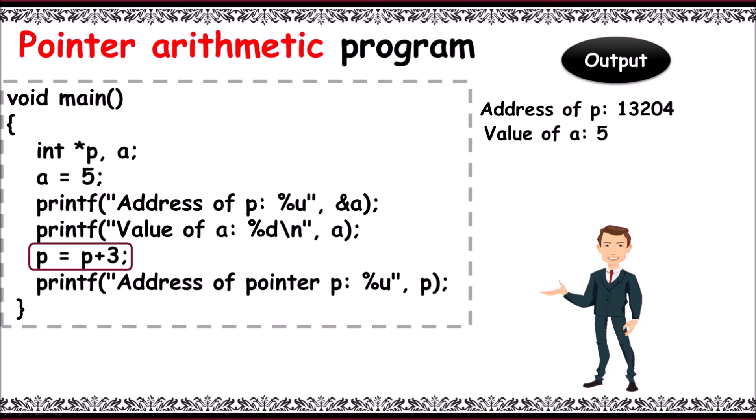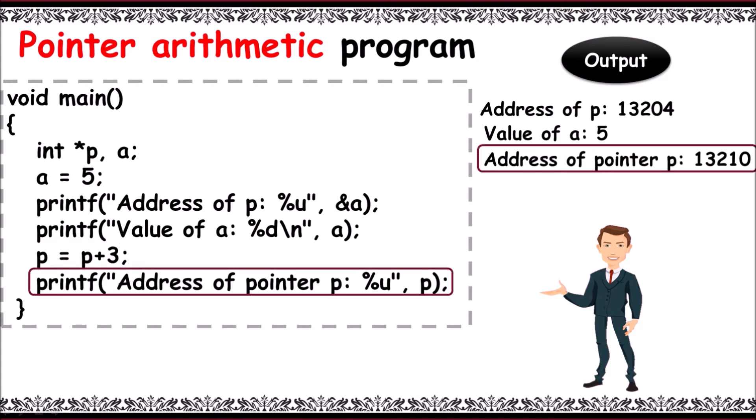That is, 3 into 2. And next, it prints address of pointer as 13210.